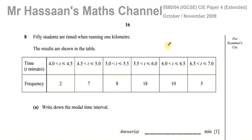Welcome back to Mr. Hassan's Maths Channel. I'm now going to be answering question number 8 from the International IGCSE of Cambridge from October-November 2009, Paper 4. This question is about statistics. Here we have a frequency table which shows 50 students who are timed when running 1 km, and the results are shown in the table.